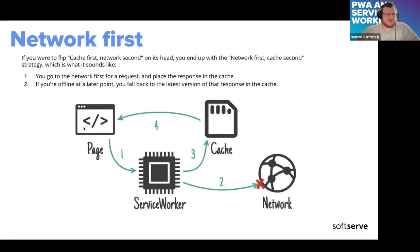Network first is similar. When the web application makes a network request, the service worker intercepts it and tries to provide data from the network. But if the internet connection is lost, the service worker tries to provide data from the cache instead.